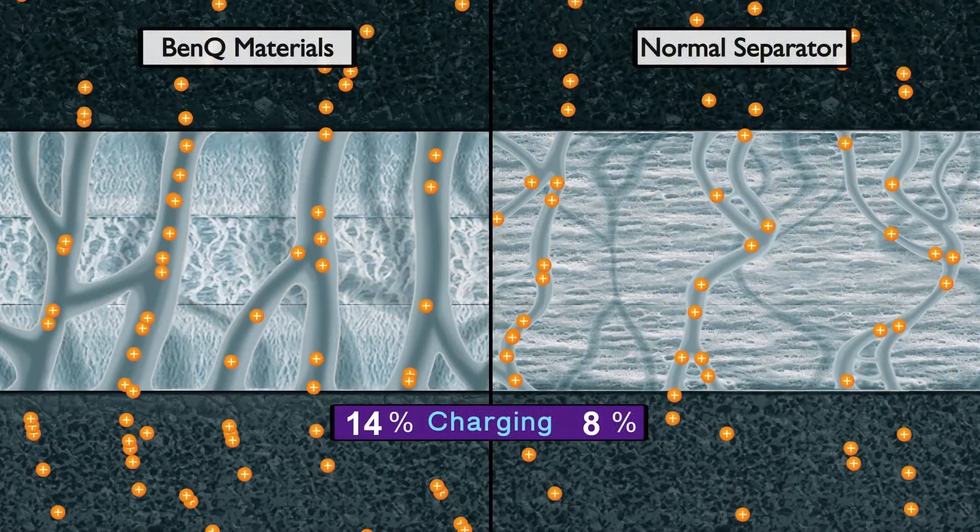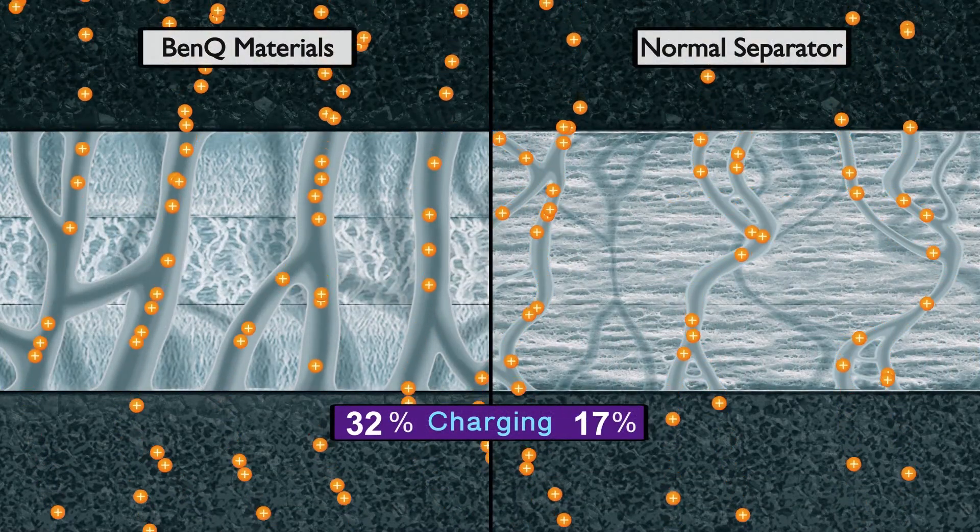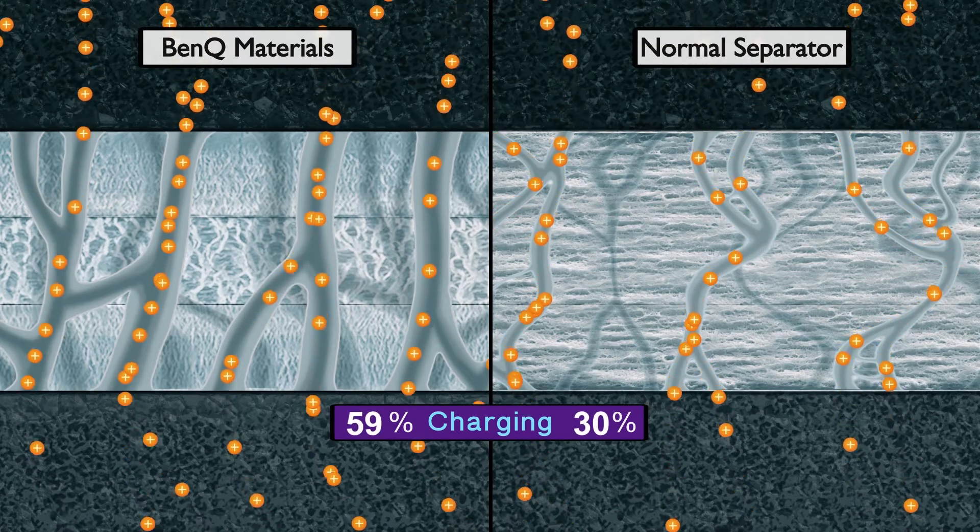The low resistance of BenQ materials multi-layer separator helps transmissibility, which leads to improved charging efficiency.